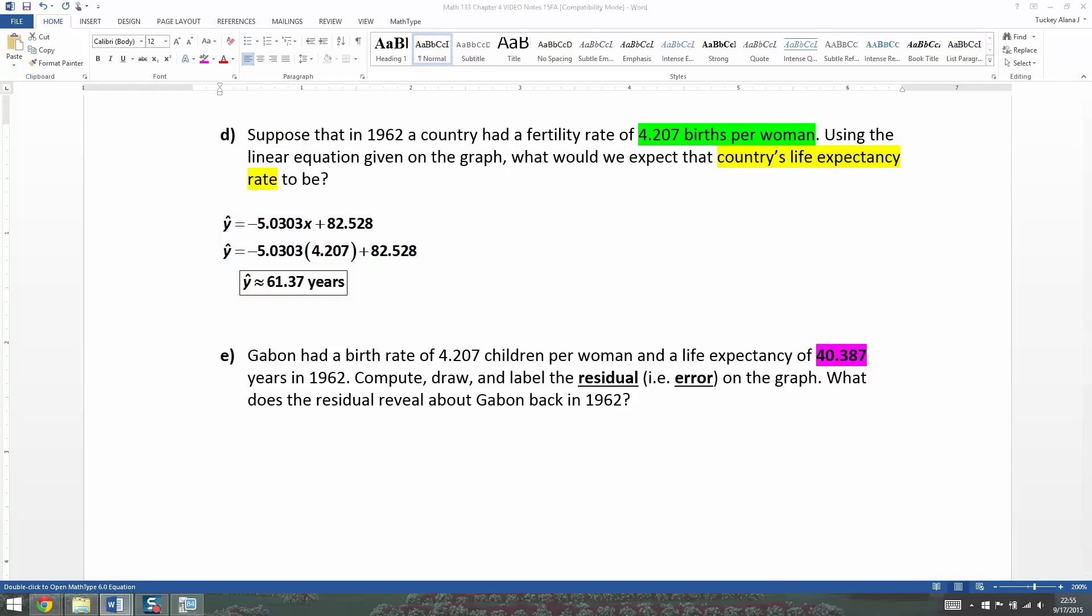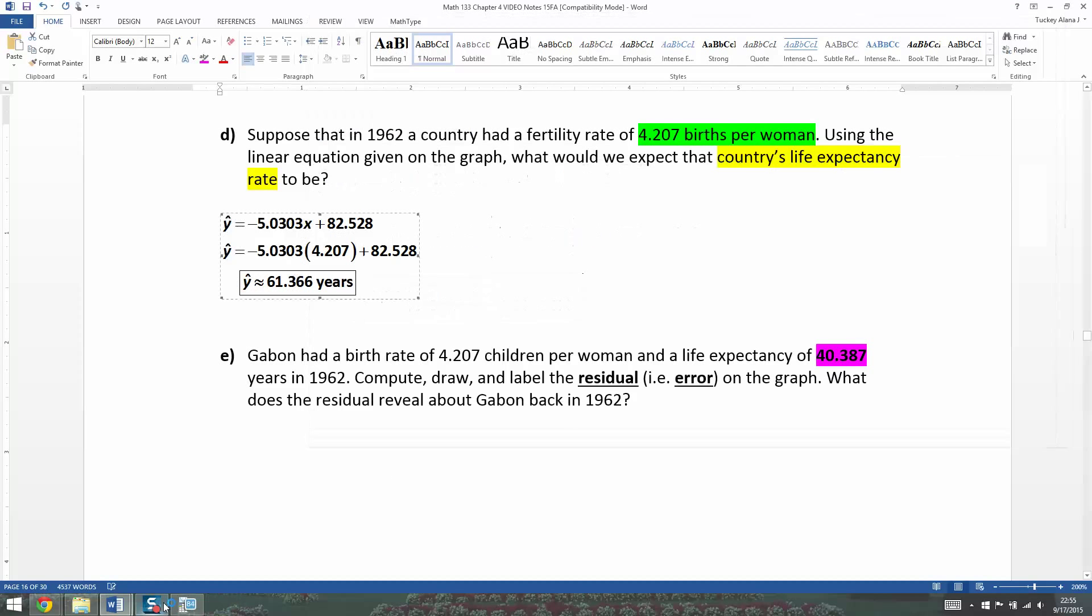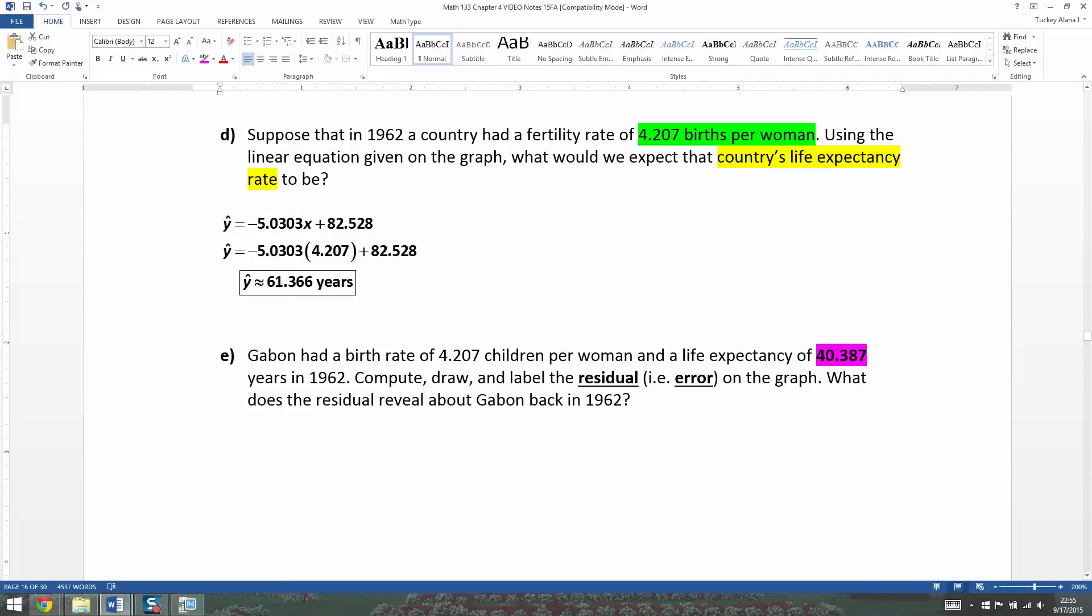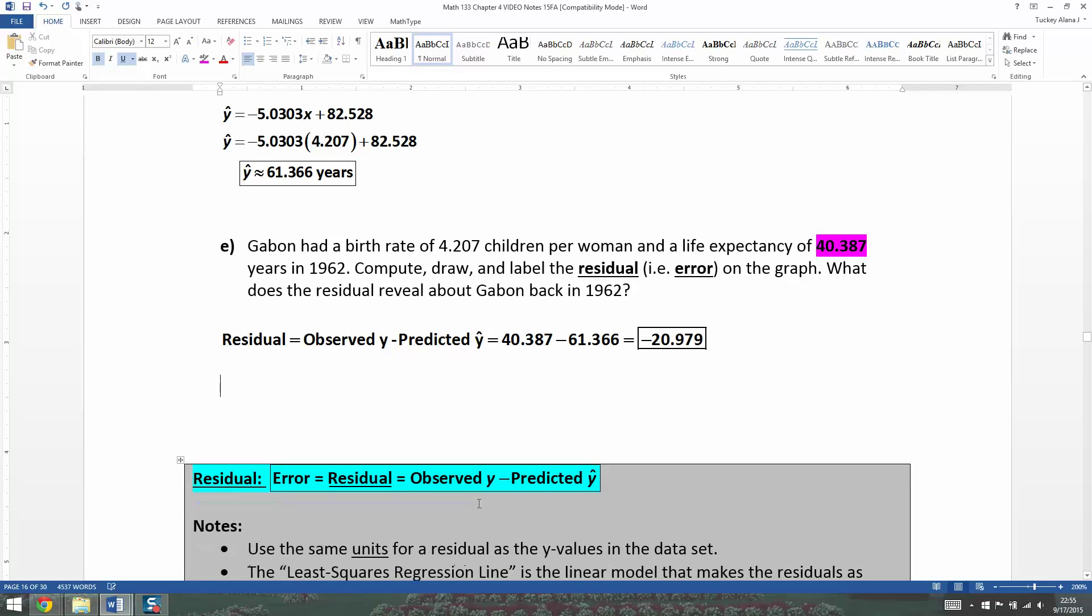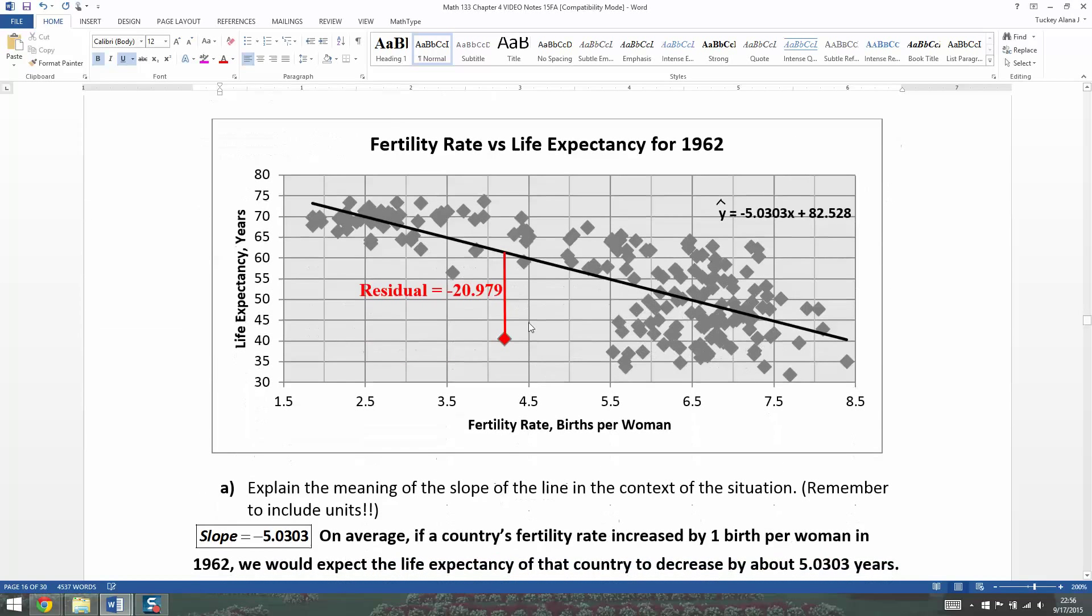So this was reality, and we want to subtract away what we thought it would be, which is the 61.366. So that makes our residual 40.387 take away 61.366, which is a negative 20.979, which is quite large, actually. Now I'm going to go back and label it on the graph, which I actually already did. It's right here. So here's Gabon. I picked Gabon because it sticks out there like a sore thumb on its own. It's that point right down there. And then the vertical distance from the predicted line, that black line right there, to where that point is, that is your residual. Because your point is below the line, you actually have a negative residual here.